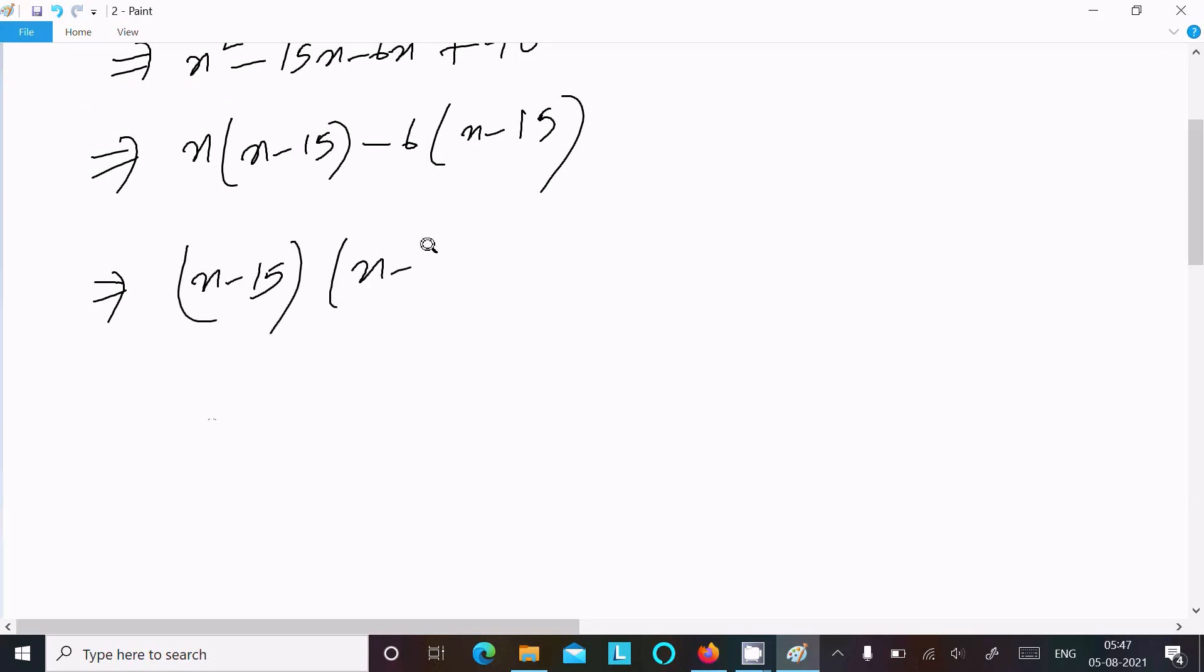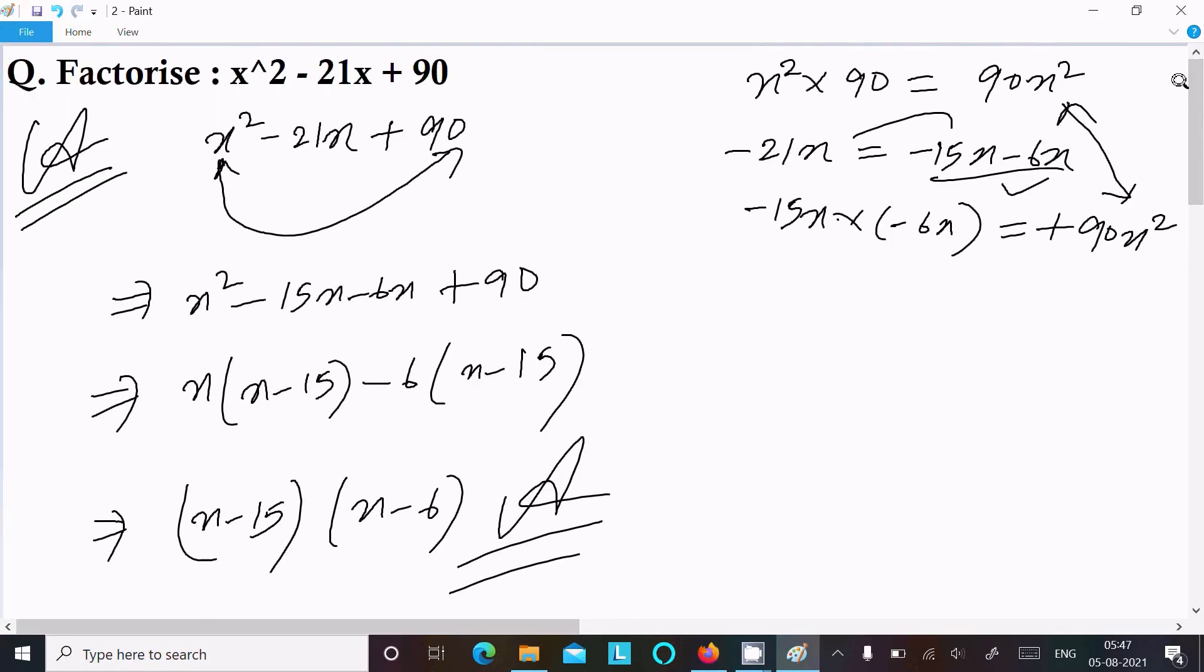After that, x - 15 take the common, so here x - 6. This is the answer of this question. This is the way we can factorize this equation. I hope this video is helpful for you. Thanks for watching, see you next time.